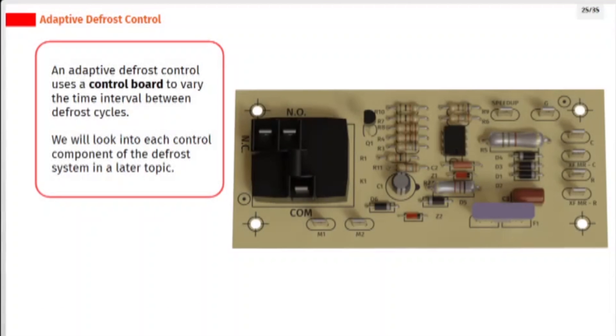An adaptive defrost control uses a control board to vary the time interval between defrost cycles. We will look into each control component of the defrost system in a later topic.